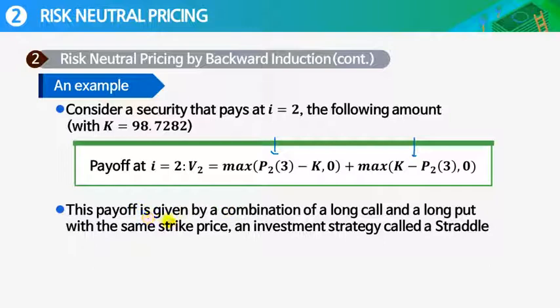This payoff is given by a combination of long call and long put with the same strike price, an investment strategy called straddle. Having long position in call and long position in put is called a straddle. So it is a straddle position in bonds, and here the underlying bond is a zero coupon bond maturing in 1.5 years.